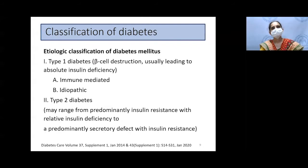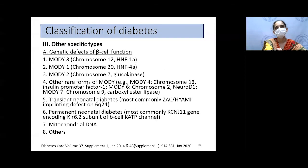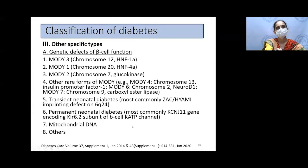The ADA classifies diabetes by etiology: type 1 (beta cell destruction causing absolute insulin deficiency, either immune-mediated or idiopathic) and type 2 (combination of insulin resistance and defective insulin secretion). Other types include genetic defects in beta cell function such as the different MODY types, neonatal diabetes (transient or permanent), and mitochondrial mutations causing diabetes. Genetic defects in insulin action include syndromes associated with insulin resistance and lipodystrophic diabetes.